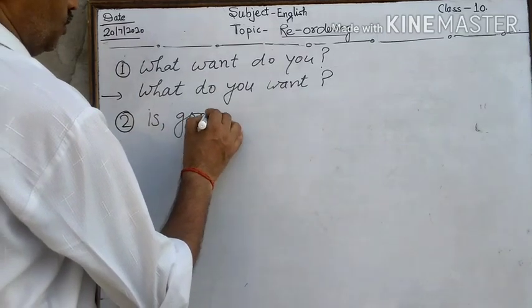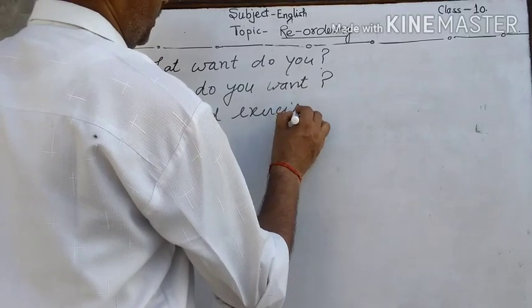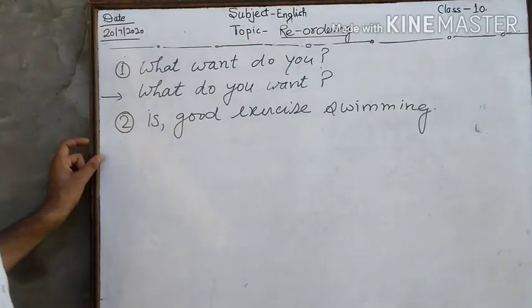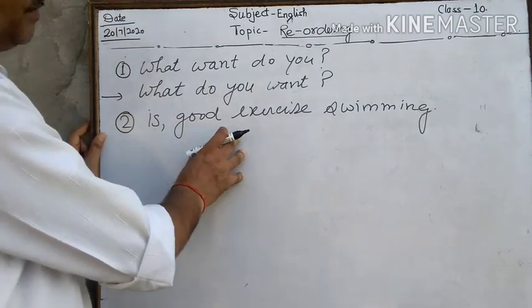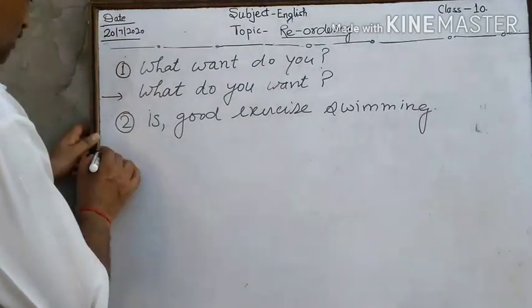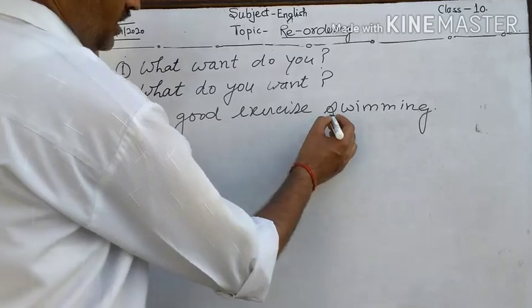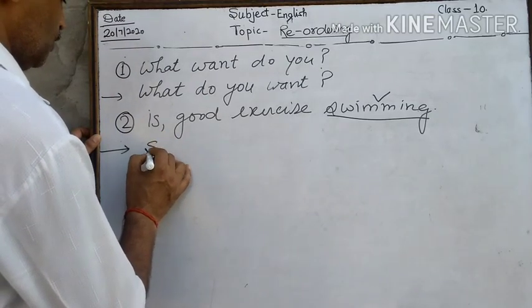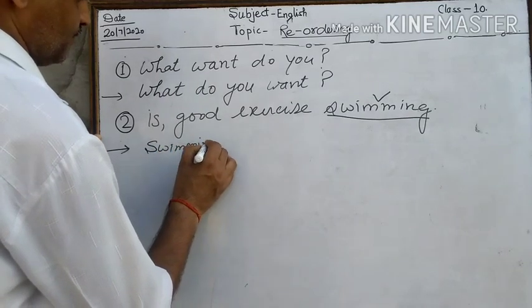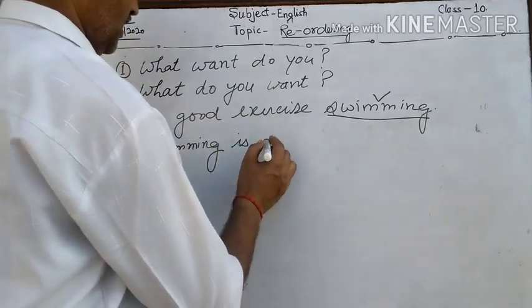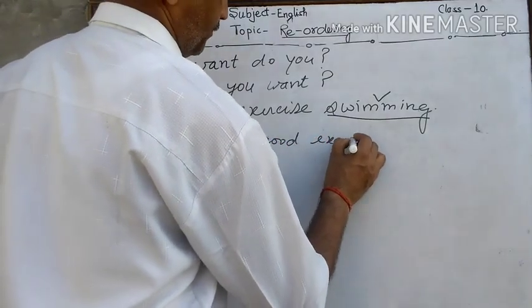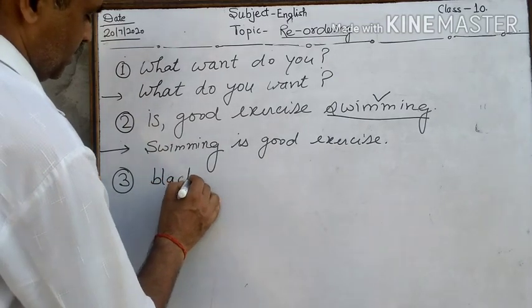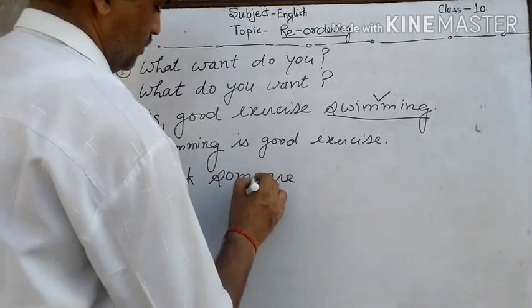Swimming is good exercise. Students, subject and predicate parts are not in correct order. First of all, pick out subject part. You will see in this sentence, you will write 'swimming' first of all, after it 'is good exercise'.